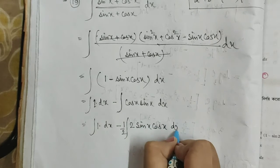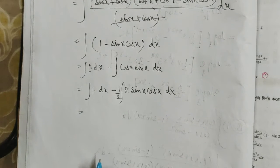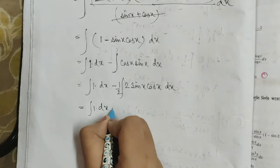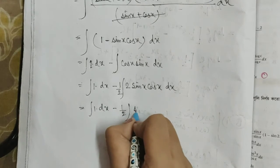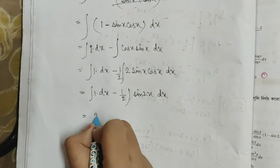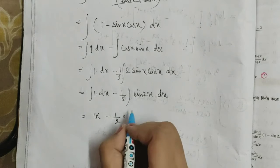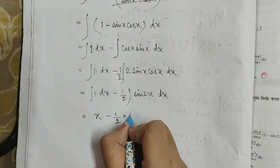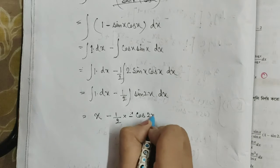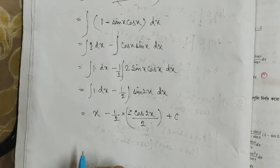2 sin x cos x equals sin 2x. So sin 2x leads us to: integral of 1 dx minus half times integral of sin 2x dx. So the result is x minus half, applying what we know.